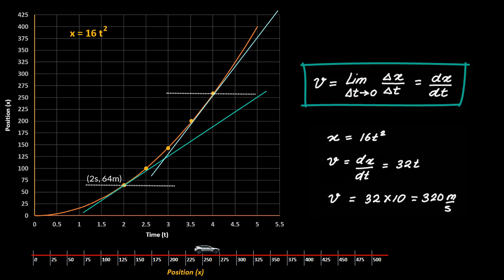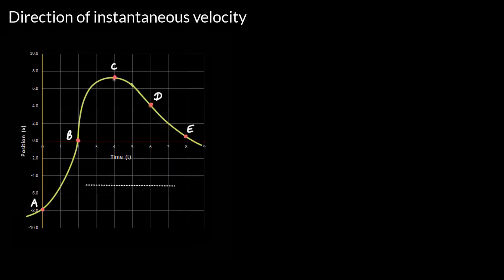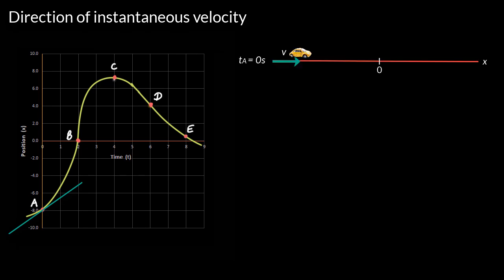Let us see what the slope of the tangent at any point tells us about the direction of velocity at that point. Consider this x versus t graph. At t = 0, the slope of the tangent at this point is positive, because the line is tilting to the right in the upward direction, which basically means that the velocity is also positive, or the car is moving in the positive x direction.